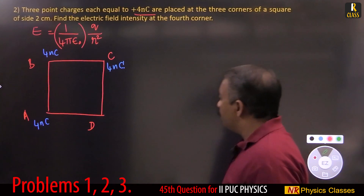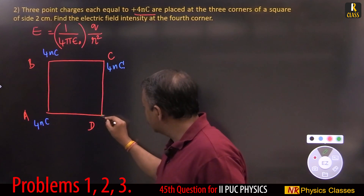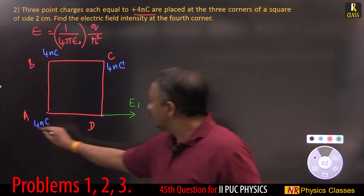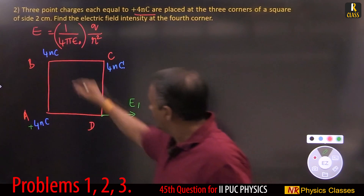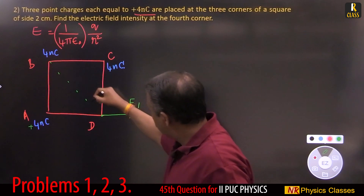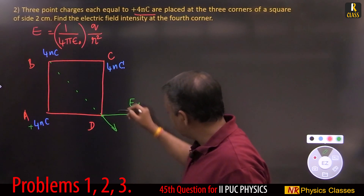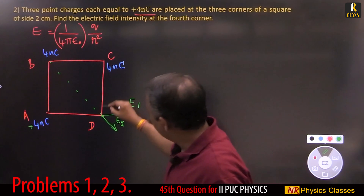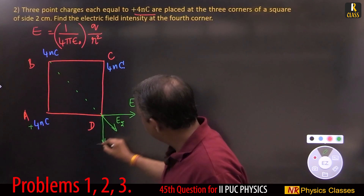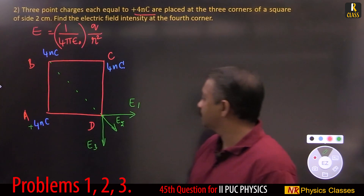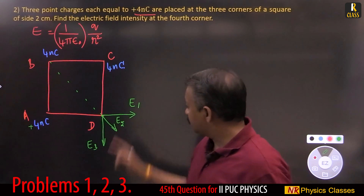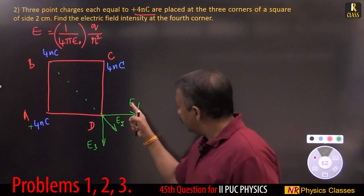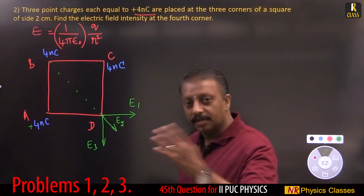Because of the charge at A, the electric field at point D is directed away — this is E1. Since the charge is positive, the field is away. Because of the charge at B, the electric field is away along the diagonal — this is E2. Because of the charge at C, the field is away — this is E3. Step 1: find E1, E2, E3. Step 2: find the resultant of E1 and E3. Step 3: final answer.